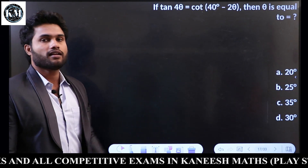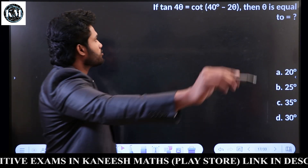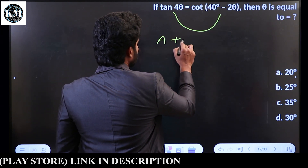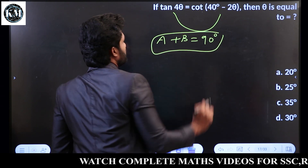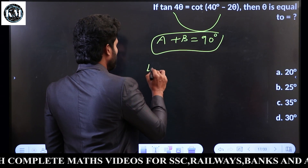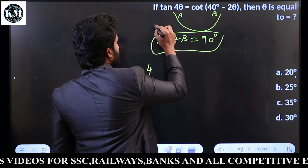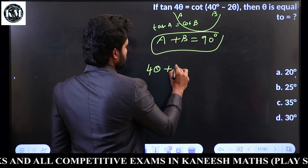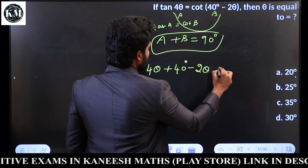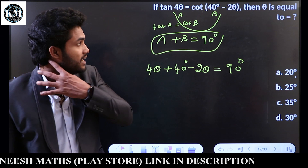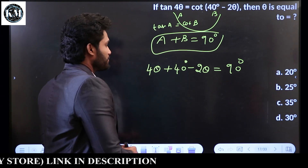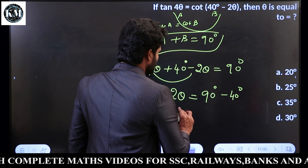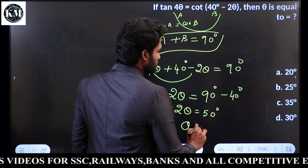Now let's look at the rule. In video number 3: tan theta, tan A is equal to cot B, and A plus B equals 90 degrees. So applying this: 4 theta is A and this is B. So, 4 theta plus 40 degrees minus 2 theta equals 90 degrees. Therefore, 2 theta is equal to 50 degrees, and theta is equal to 25 degrees. Answer is option B.